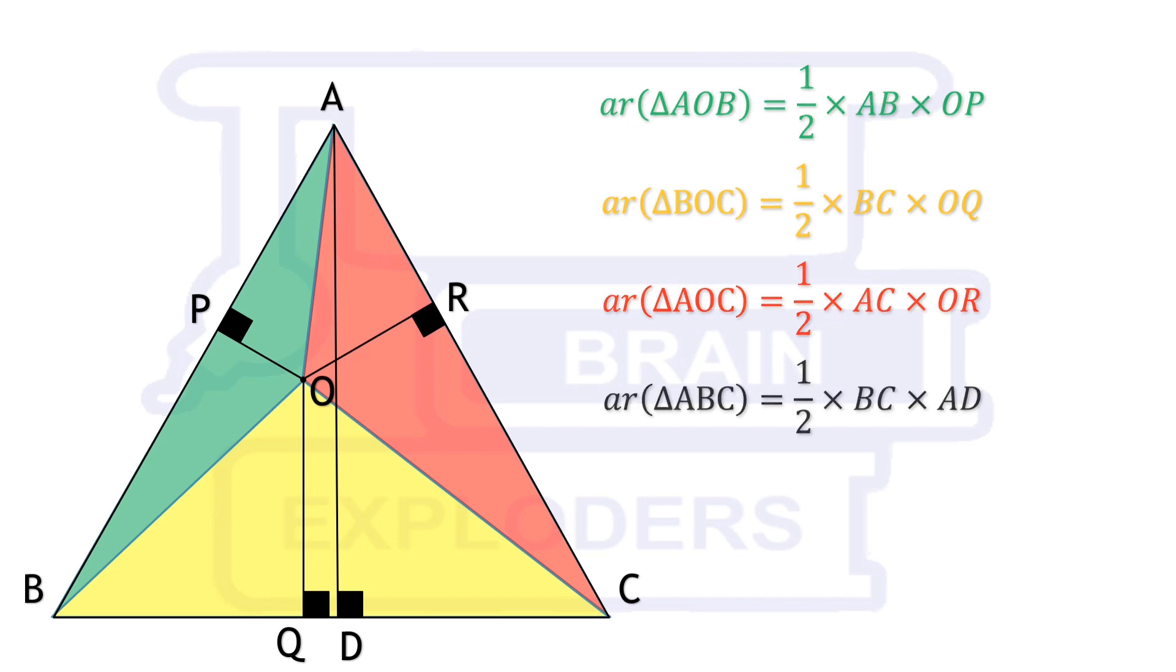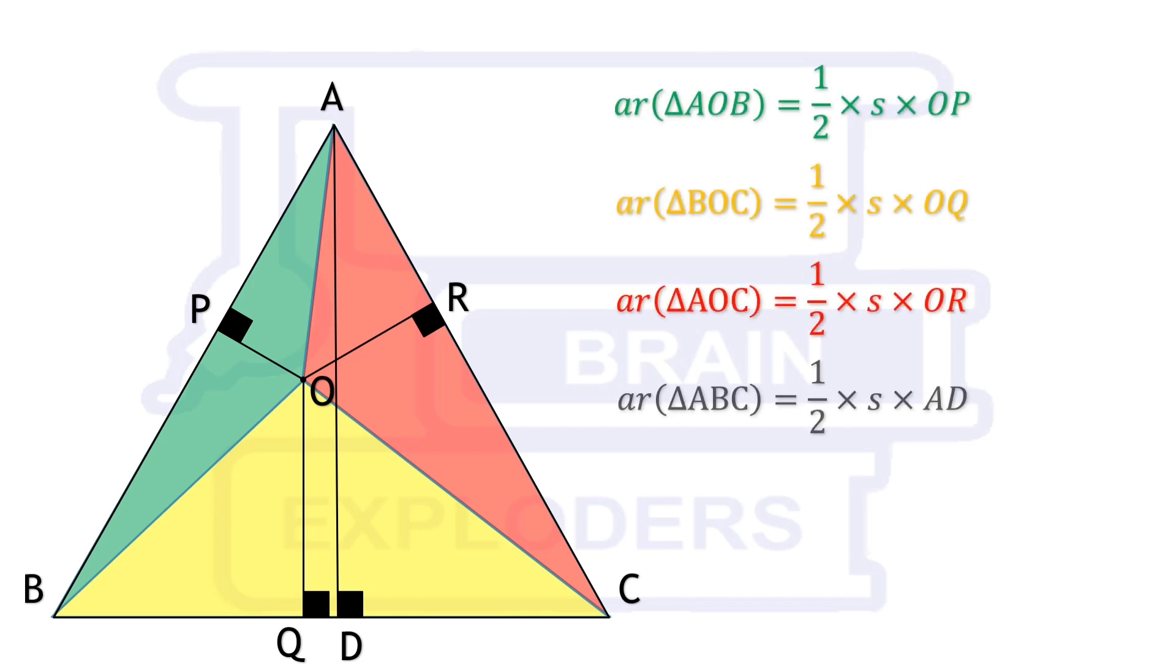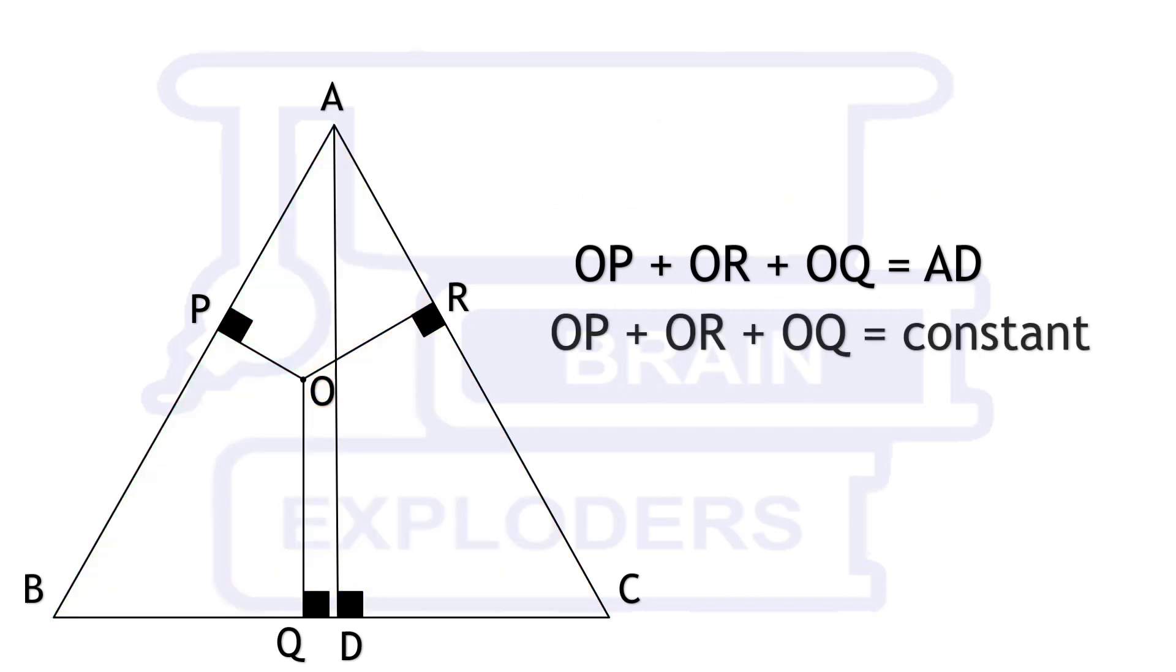All the sides of an equilateral triangle are equal, so let us substitute these sides of triangle by a variable S. Sum of areas of green, yellow, and red triangle is equal to area of triangle ABC, and half S is common in all these. Therefore, sum of OP, OQ, and OR is equal to AD, and here AD is constant. We will use this concept in our question.